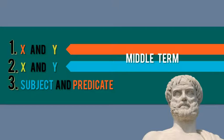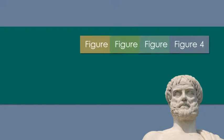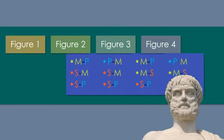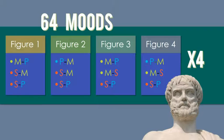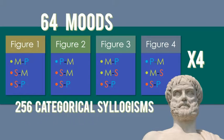So, the middle term, or the middle terms, can end up in four possible positions and we call these figures 1, 2, 3, and 4. Pretty easy, right? Alrighty then. So, we've got 64 possible modes and four different figures. So, 64 times 4 equals 256. That means there's 256 possible categorical syllogisms.